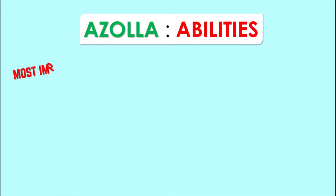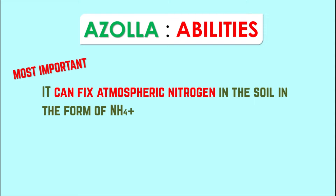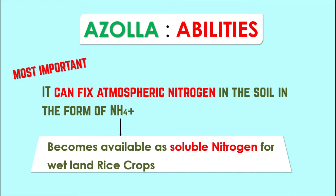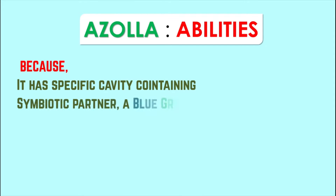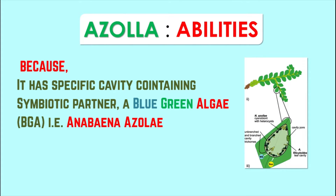Most importantly, Azolla can fix atmospheric nitrogen in the soil in the form of ammonia, making it available as soluble nitrogen for wetland rice or paddy crops. This works because Azolla has specific cavities containing a symbiotic partner — the blue-green algae Anabaena azollae — which fixes atmospheric nitrogen in association with Azolla through a symbiotic nitrogen fixation process.